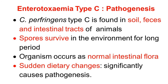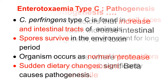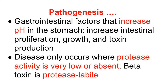That imbalance allows the proliferation of Clostridium perfringens type C, and when a large number are present, it significantly causes pathogenesis. Gastrointestinal factors — particularly those that increase the pH in the stomach — also lead to increased intestinal proliferation of Clostridium perfringens type C.